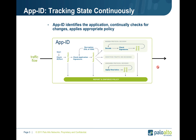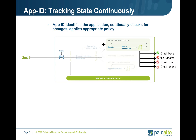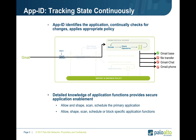Within the Palo Alto Networks next-generation firewall, AppID is the critical component to enabling secure function control. AppID identifies the application using up to four different mechanisms. It then continually tracks the changes in state, continually applying appropriate policy. For example, when we look at Gmail, Gmail will flow through the different components within AppID and then it will continually check the signatures and the decoders to determine the different components within Gmail that are being identified, and then you can apply the appropriate policy.